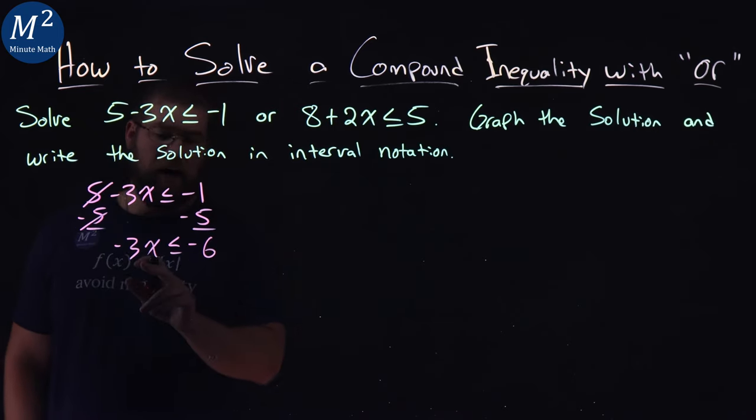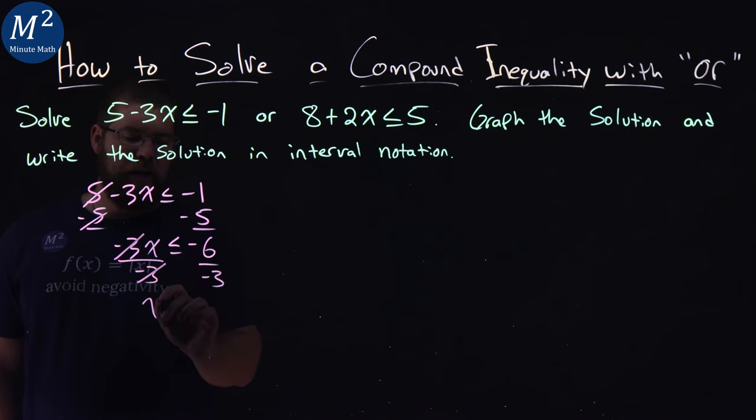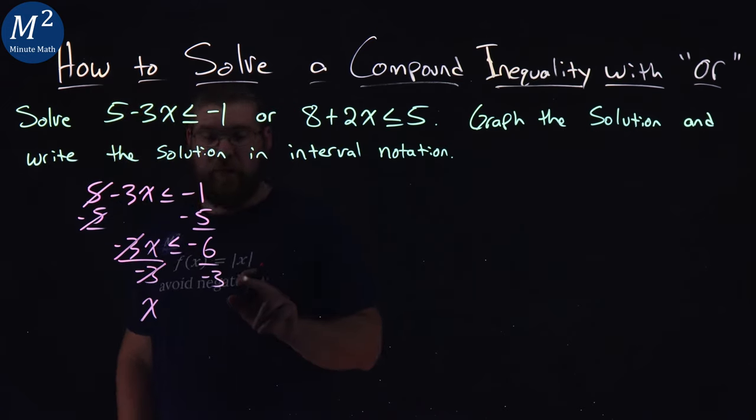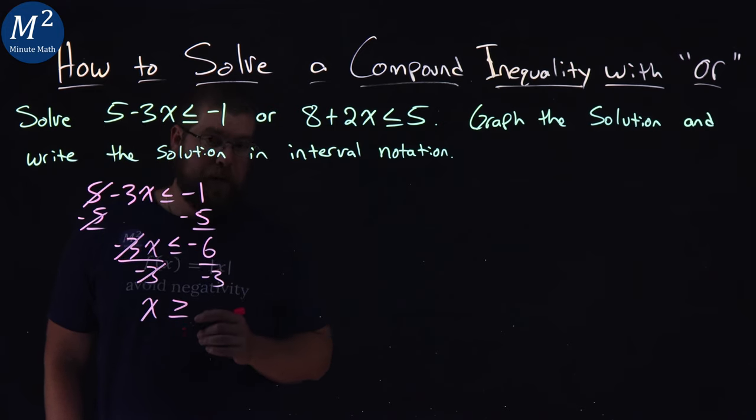From there, I want to divide by negative 3 on both sides, opposite of that multiplication. Negative 3s cancel here, we have an x. Notice I'm dividing over an inequality by a negative number. That means this inequality sign flips from less than or equal to to greater than or equal to. Don't forget that.